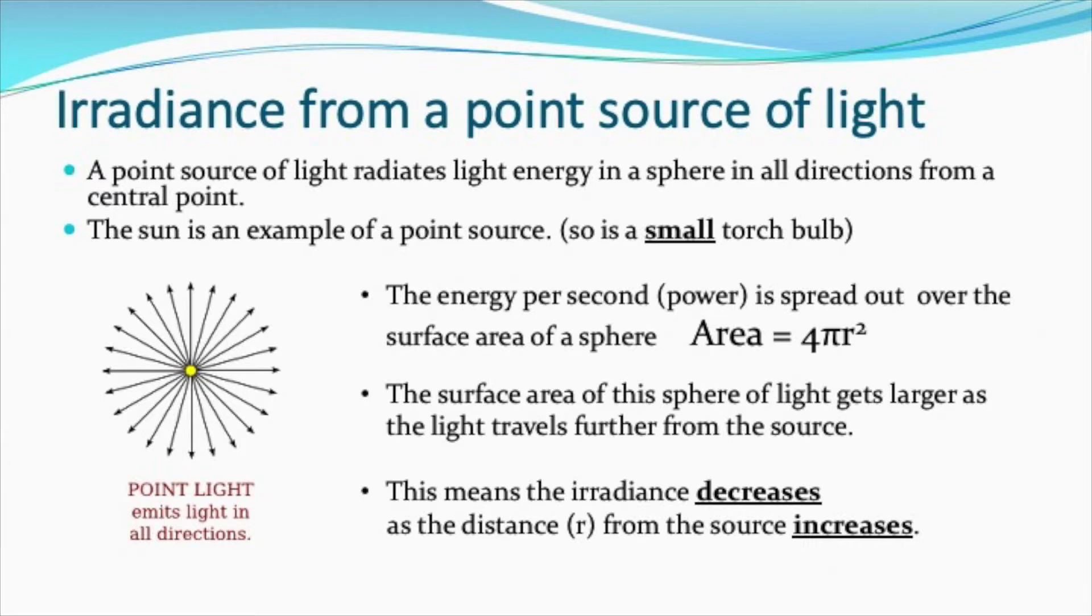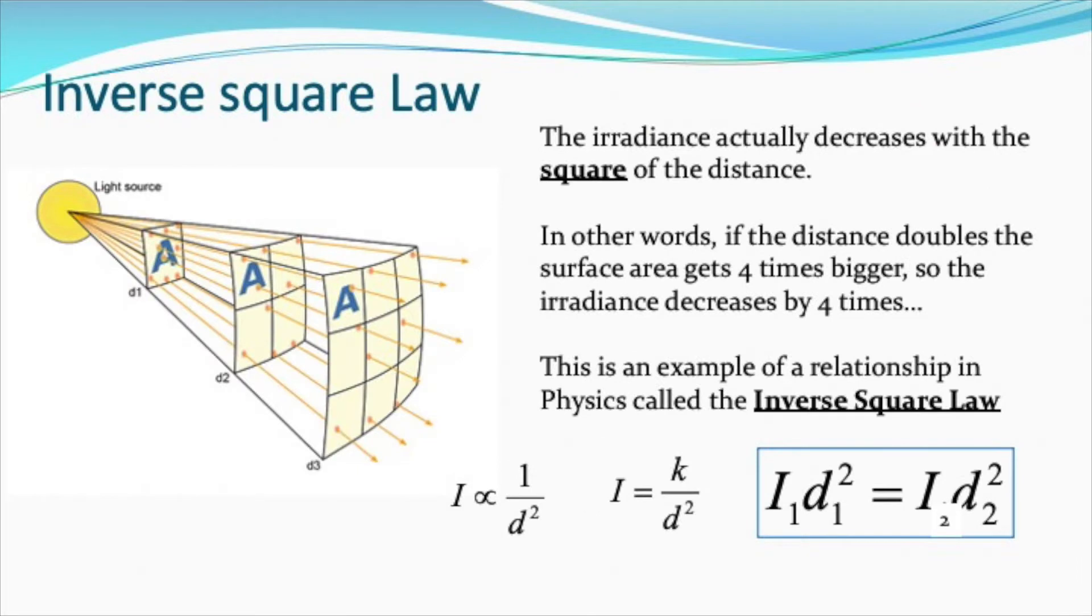So what that means is that the further away you go from that point source, the irradiance—that's the power per square meter—decreases. Another way of thinking about this is if you double the distance that you are from the point source, the surface area is four times greater, so the irradiance decreases by four times.